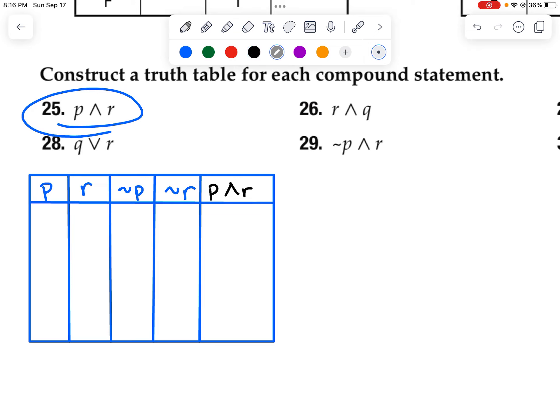And here's how I would set this up. I need to look at every single possible value, every single possible combination of P and R. So I could have true and true. Usually we start off with true and true. And at the bottom of our table, we end with false and false.